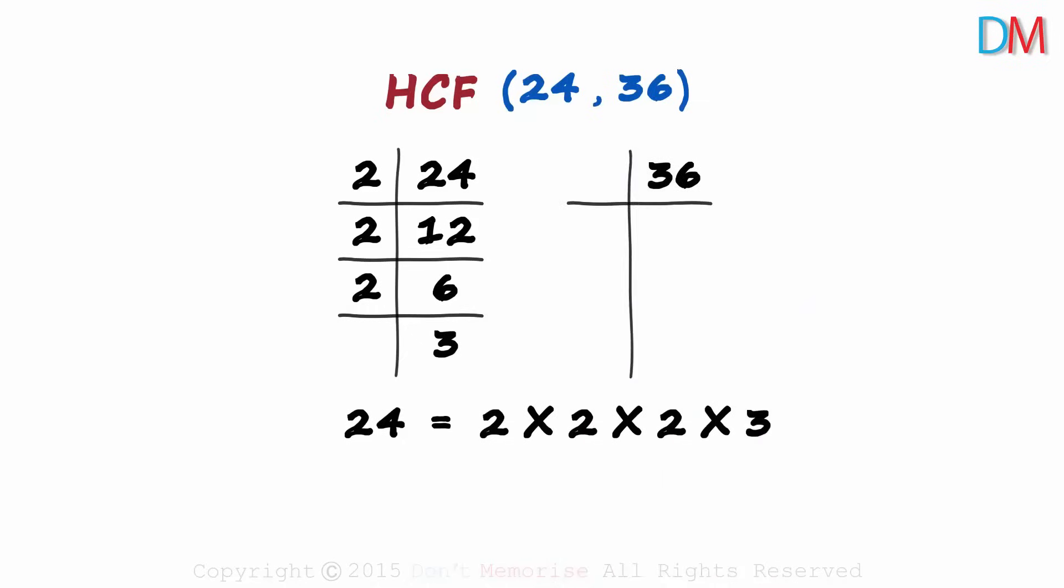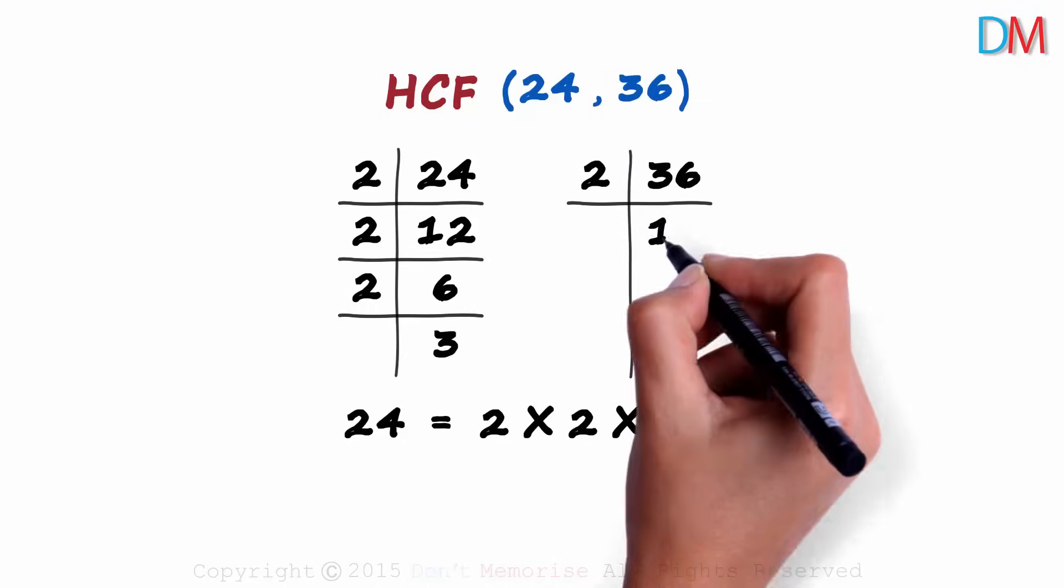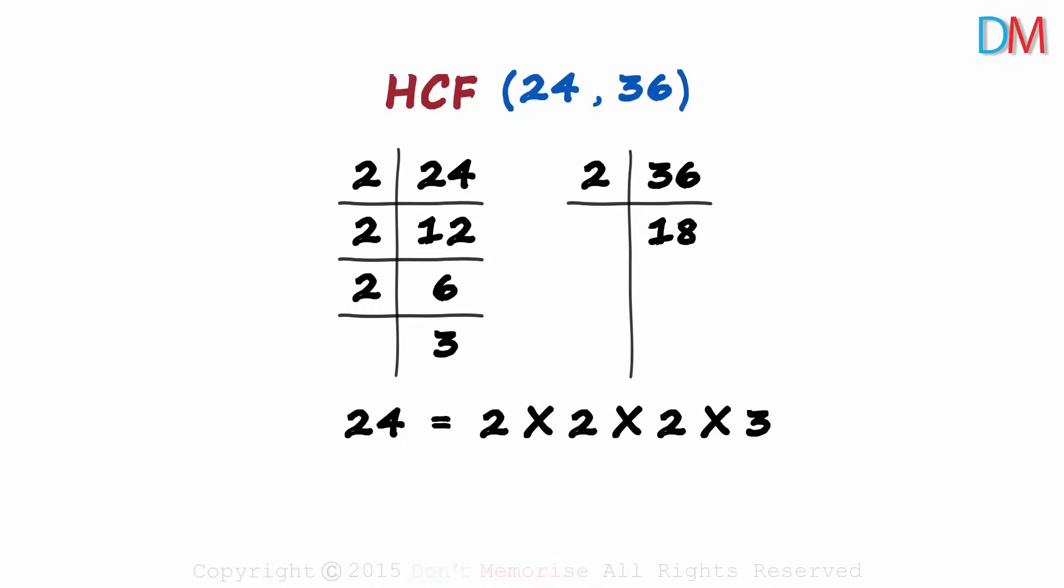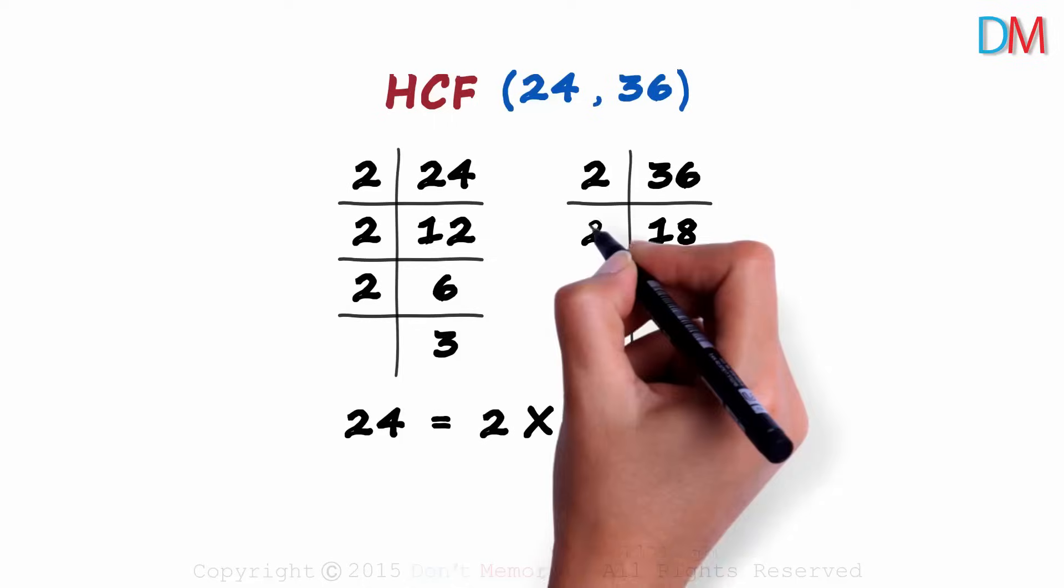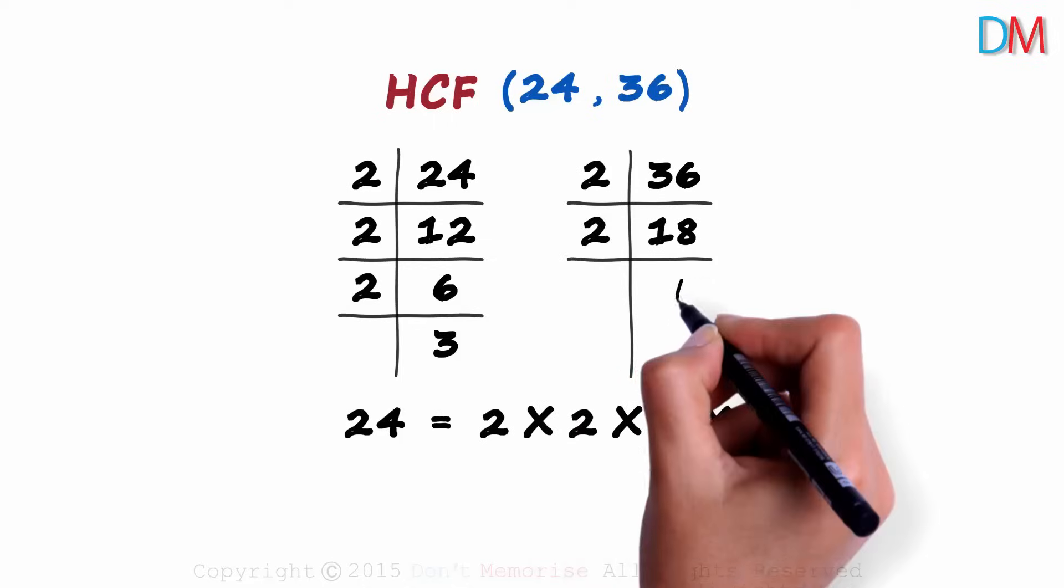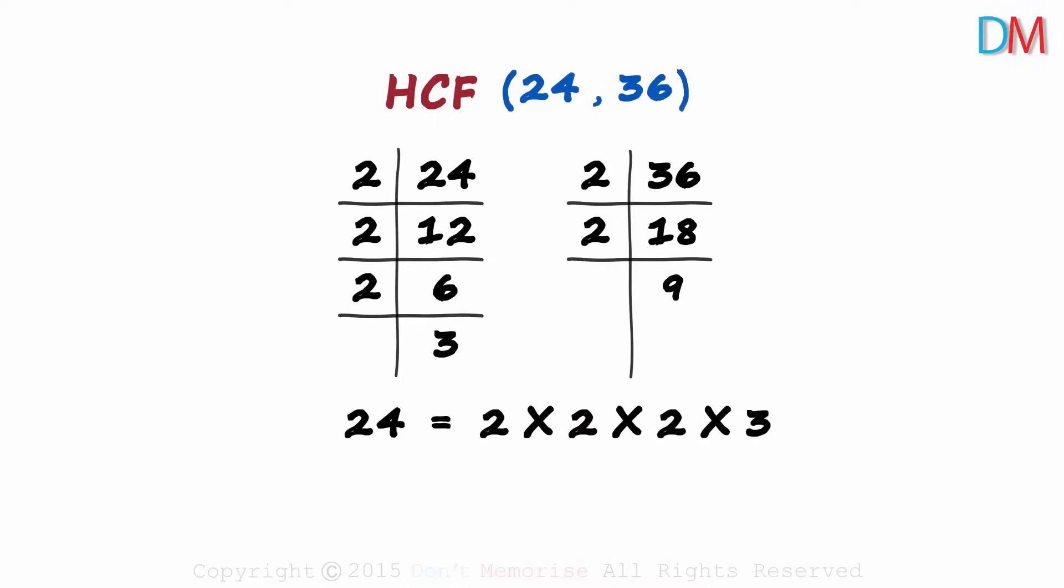36 is divisible by 2, and 2 times 18 is 36. 18 is also divisible by 2, and 2 times 9 is 18. Is 9 divisible by 2? No, 9 is not divisible by 2.